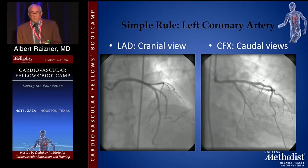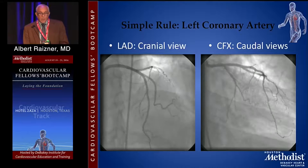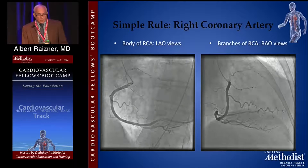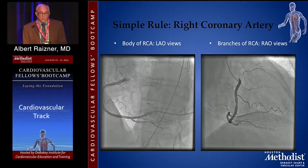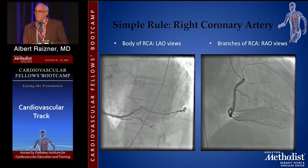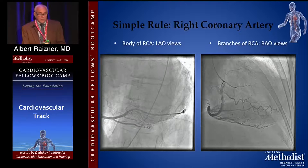At the same time, the circumflex is viewed from the caudal views — AP caudal, RAO caudal, or LAO caudal. I typically use six views for the left coronary artery in most patients, with caudal views for the circumflex. The right is simple as well. For the body of the right coronary artery, LAO views are terrific — a regular LAO or LAO cranial. For the branches, you need something that profiles them, so RAO views, both straight RAO and RAO cranial, are extremely helpful. Doing complete coronary angiography is much less complicated than coronary anatomy per se.